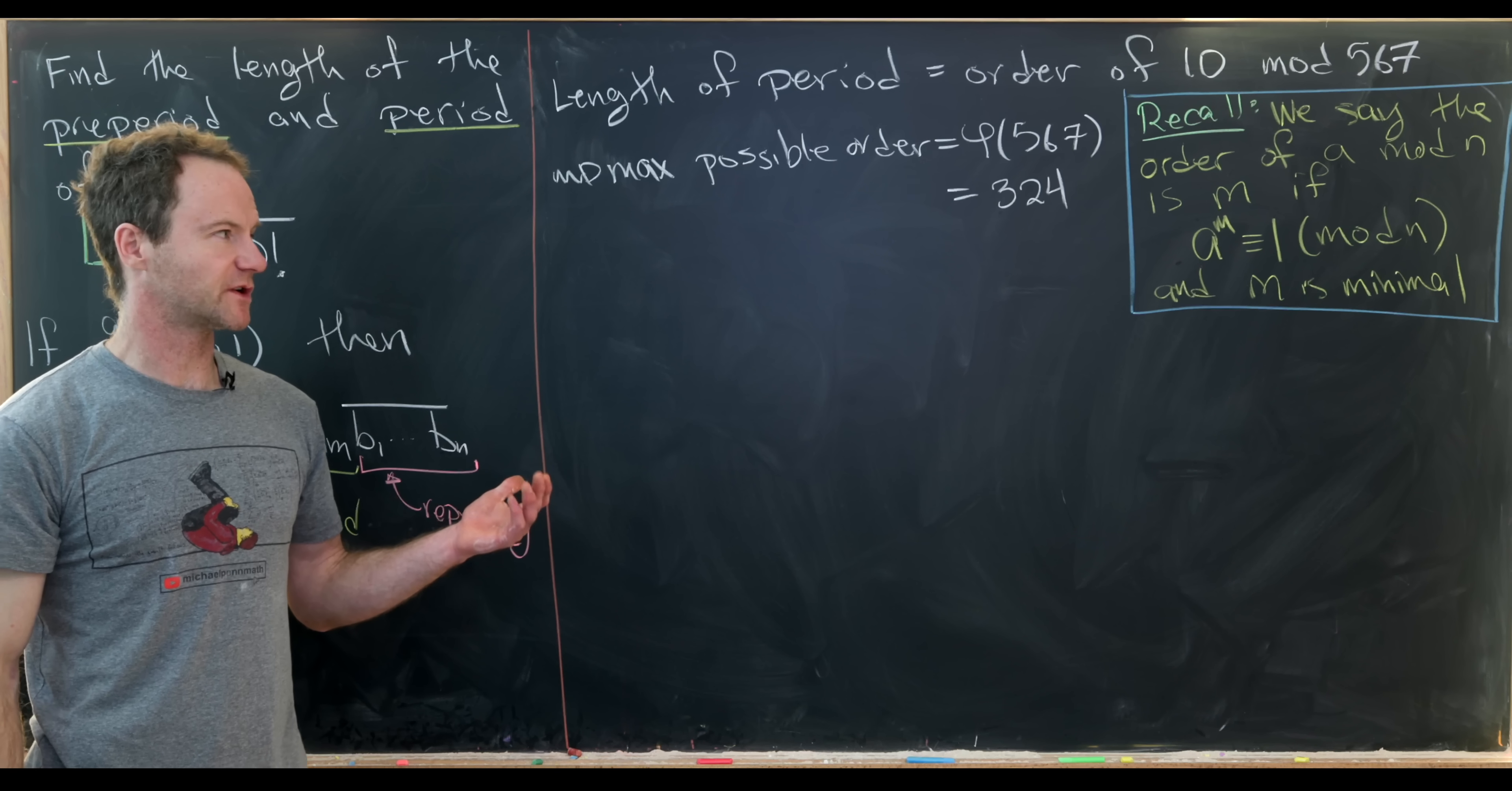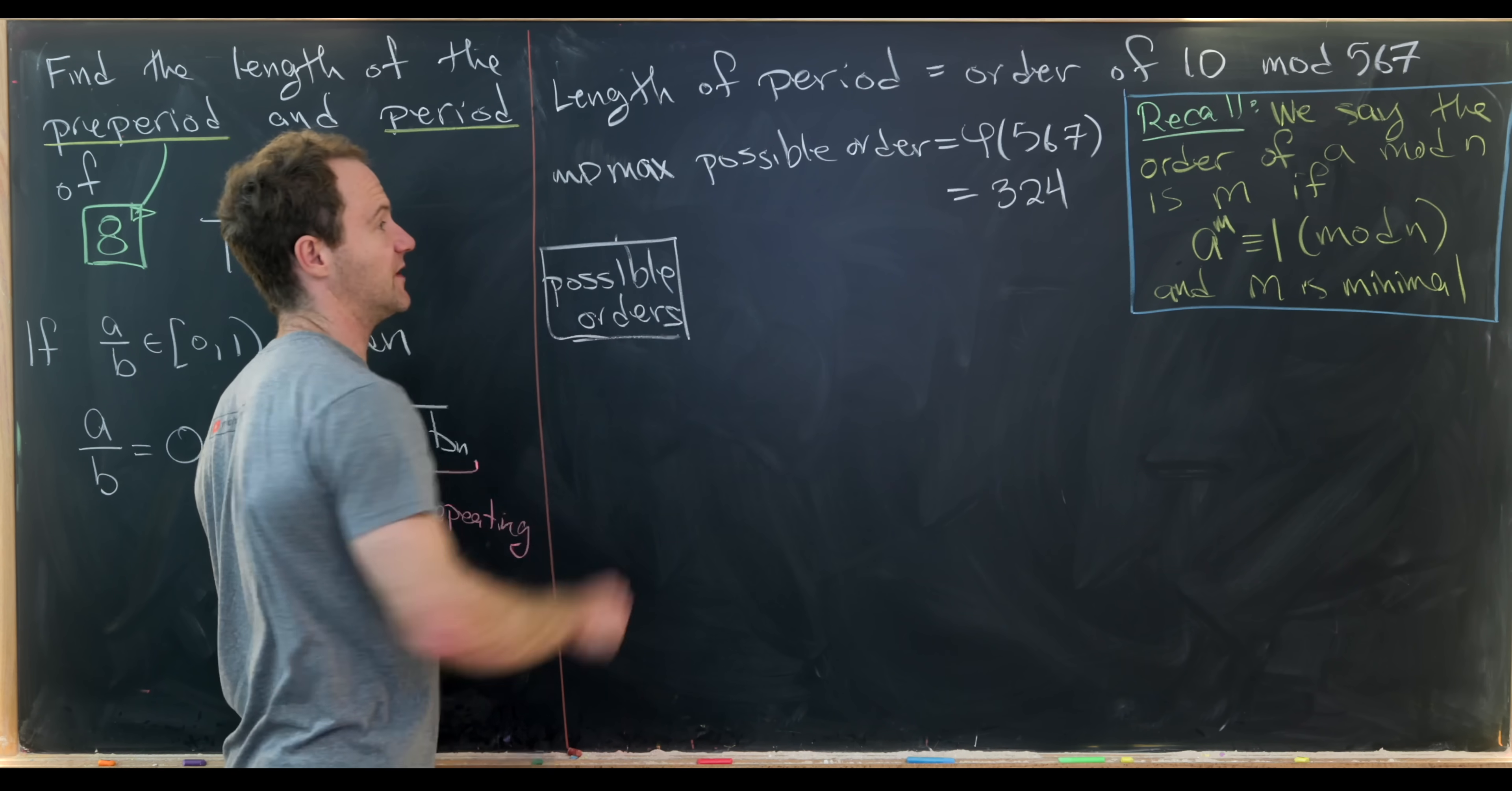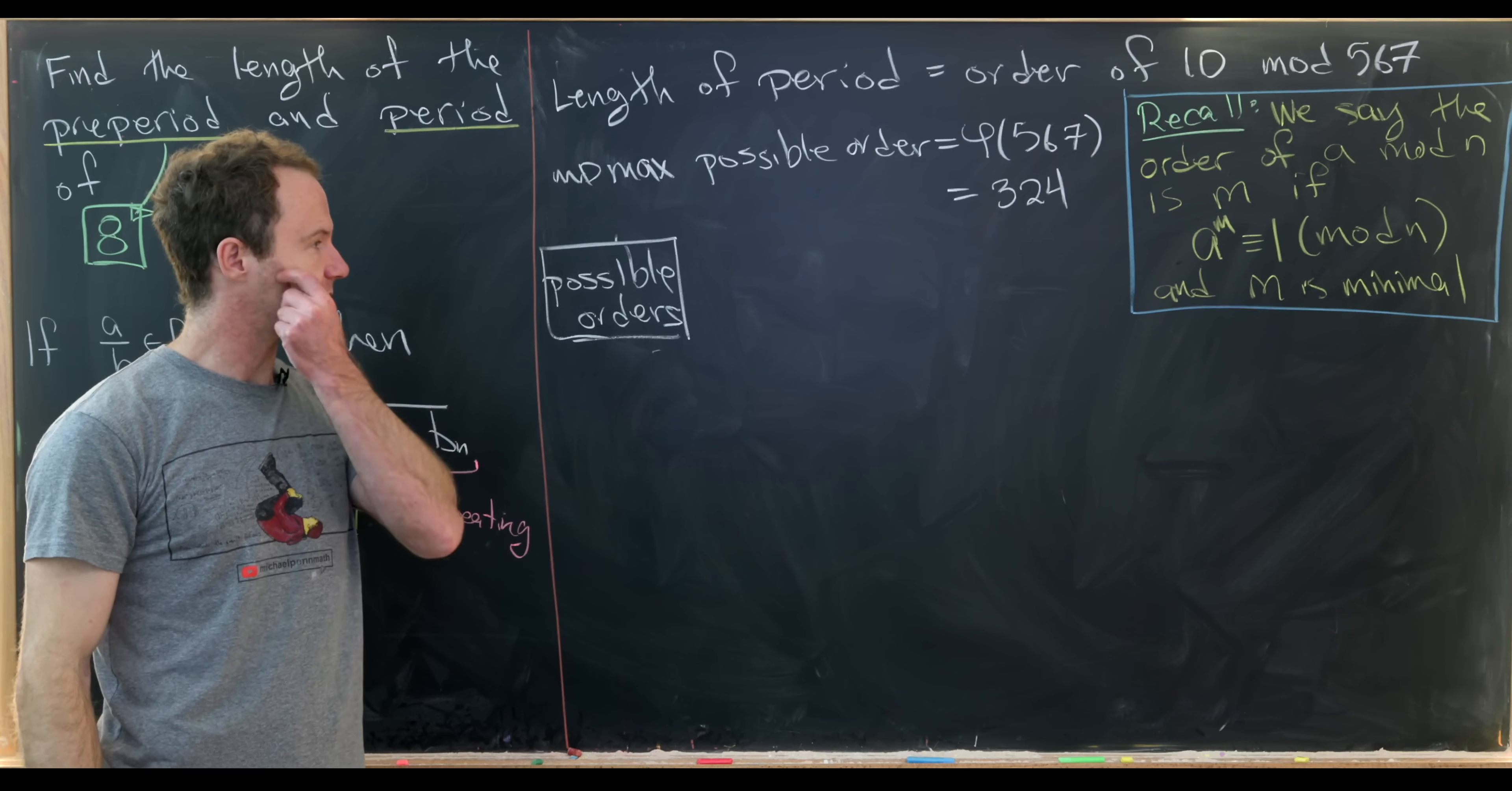Okay, so now we're going to use a result that follows pretty quickly from the definition. And that is the possible orders are simply the divisors of the maximum possible order. Okay, so let's list these systematically. So maybe we'll list all of the odd divisors here, maybe noting that this is just 2 squared and then times 3 to the 4.